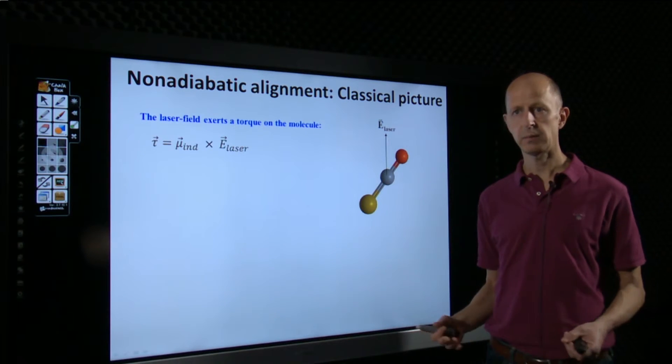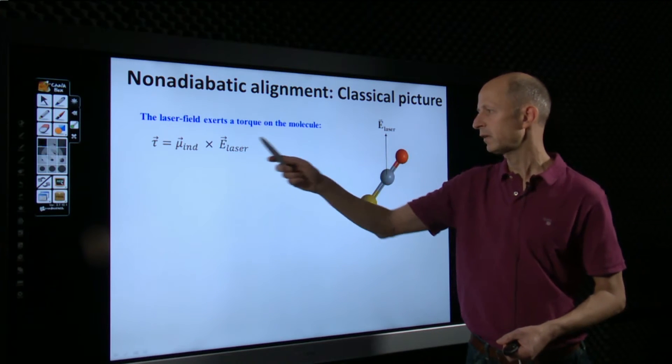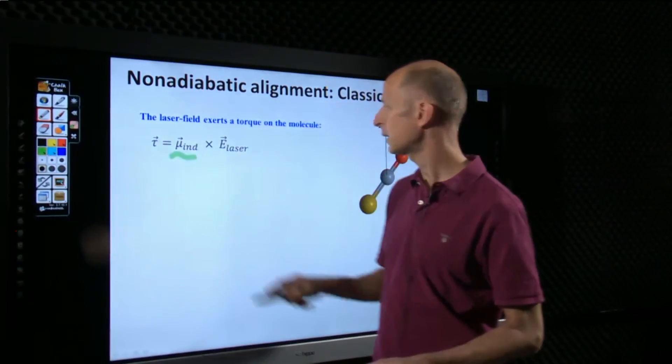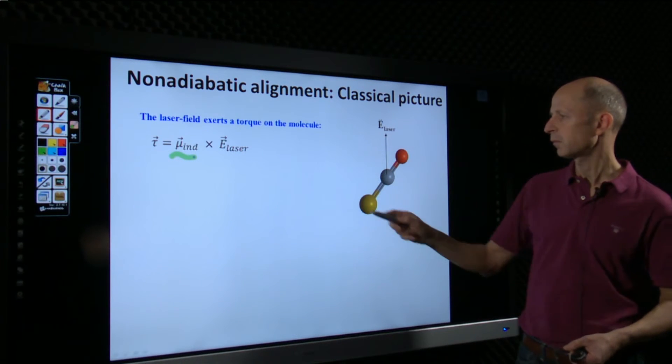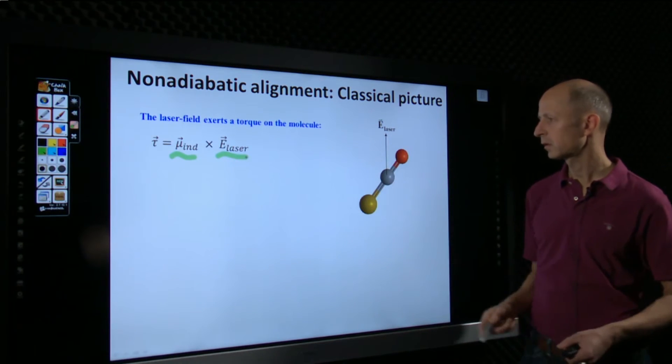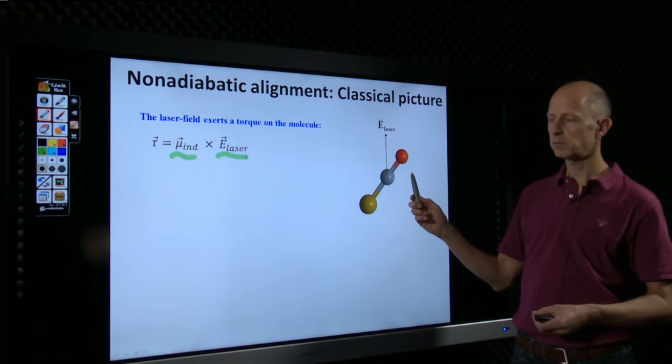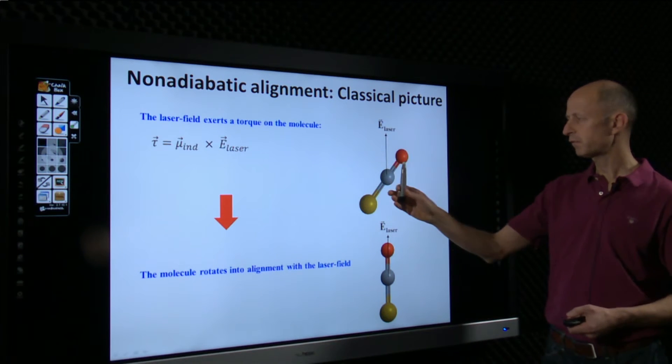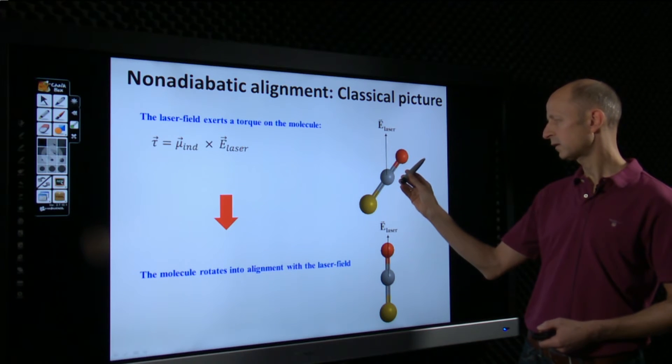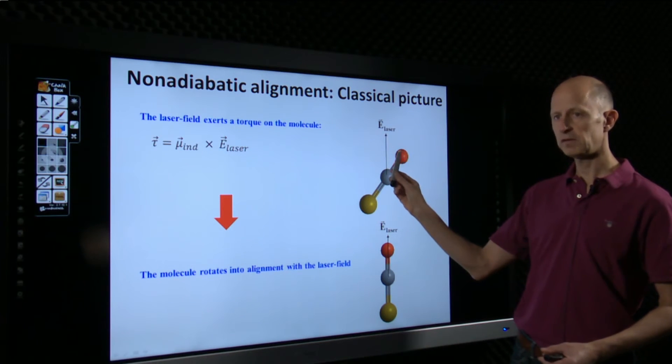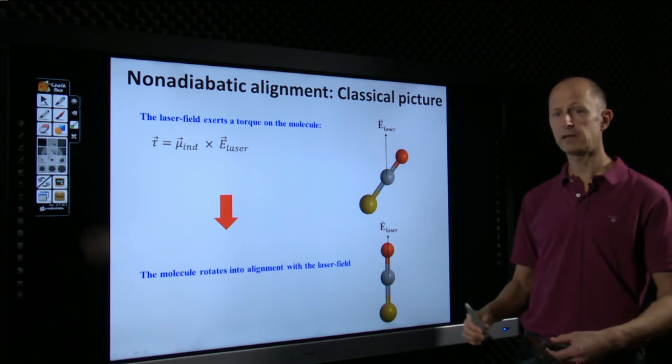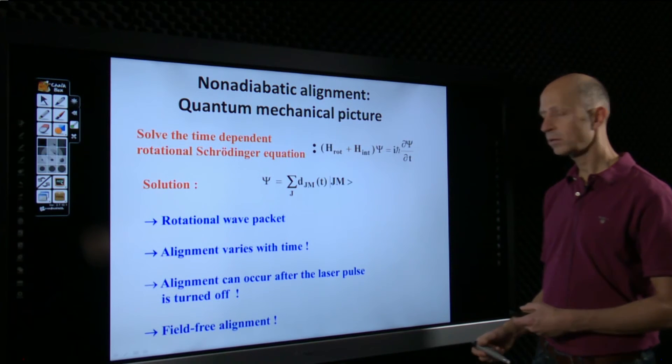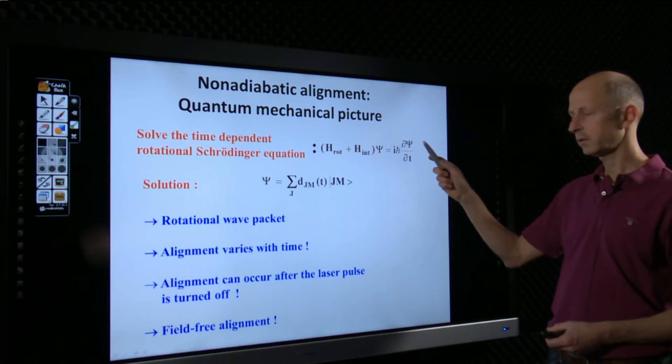Now, let me say a few words about non-adiabatic alignment. Again, the classical picture. You can think about the laser field here inducing a dipole moment in the molecule. And when there's this dipole, then the laser will basically exert a torque, which is the cross vector product of the induced dipole and the laser field. And this forces the molecule to rotate. So, after a short time, the molecule will align with the field. If the laser pulse is short, then you can think about this basically as a laser delivering just like a kick to the molecule, forcing a rotation. And as a molecule reaches alignment with the laser field, the laser field is turned off. And therefore, the molecule just continues to rotate. There's nothing that prevents it.